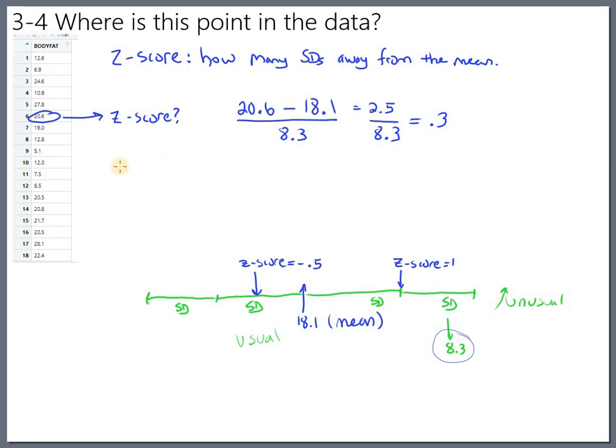So just to clarify, the formula for z-score is the individual data point that you're interested in minus the mean divided by the standard deviation.